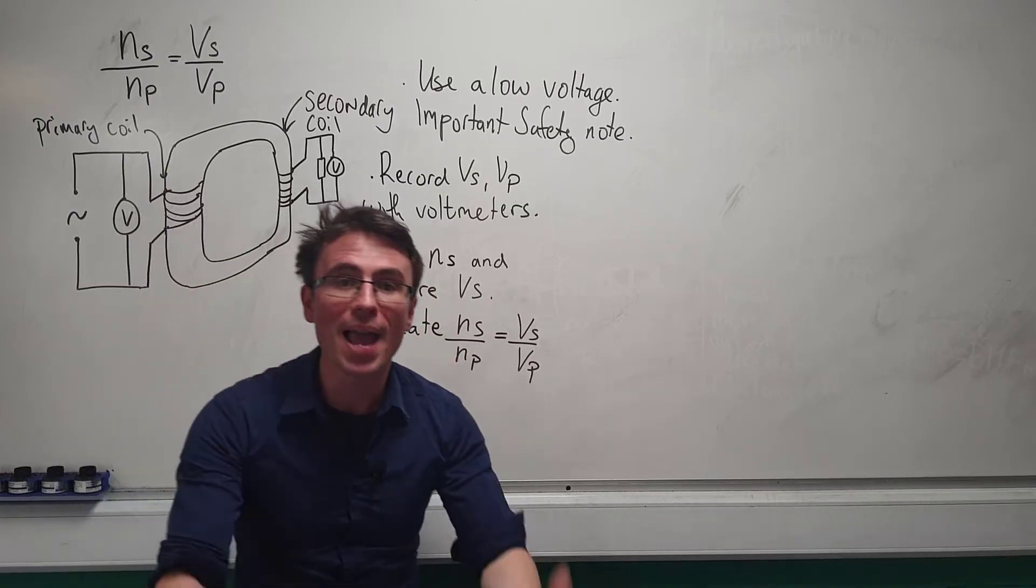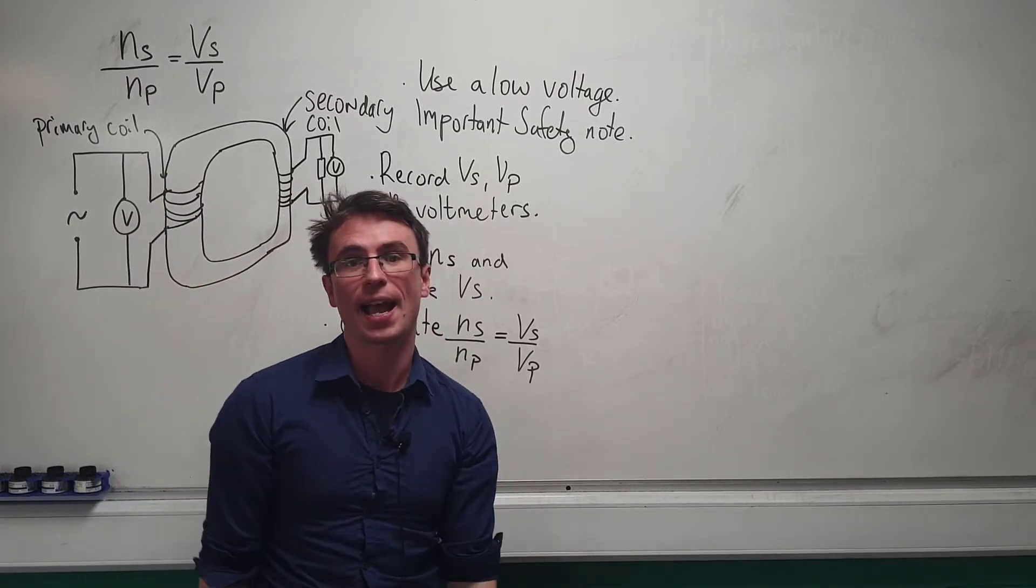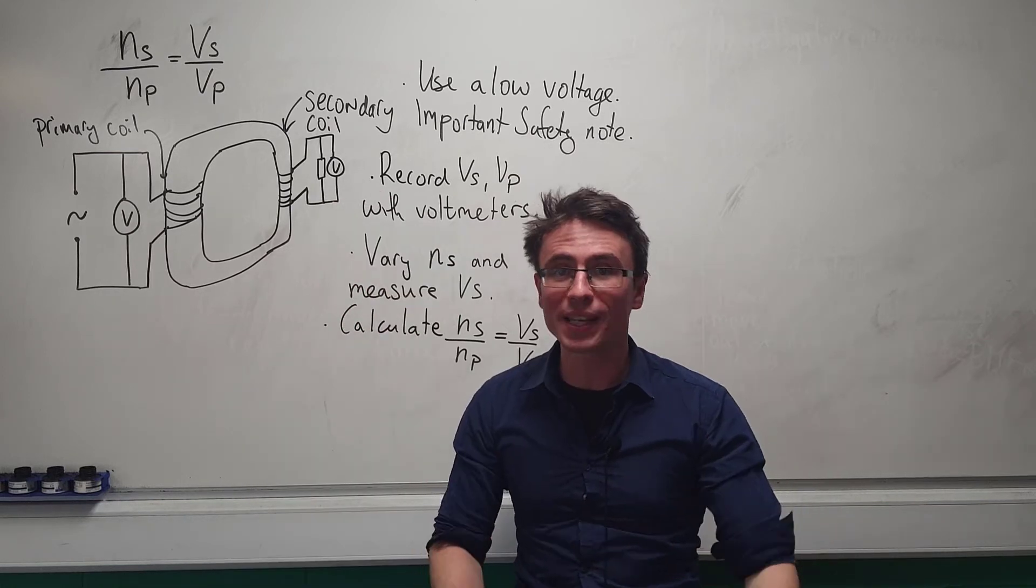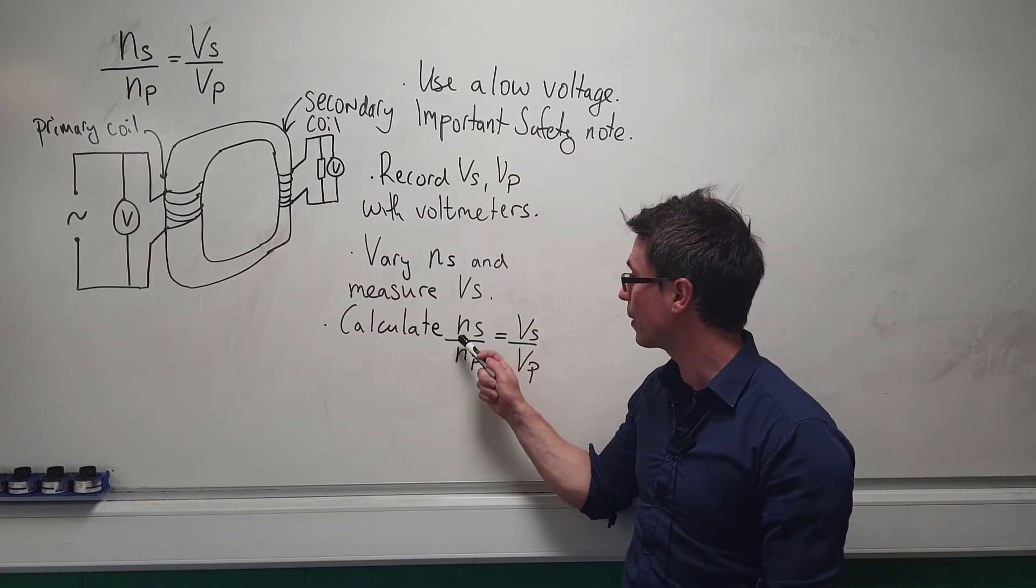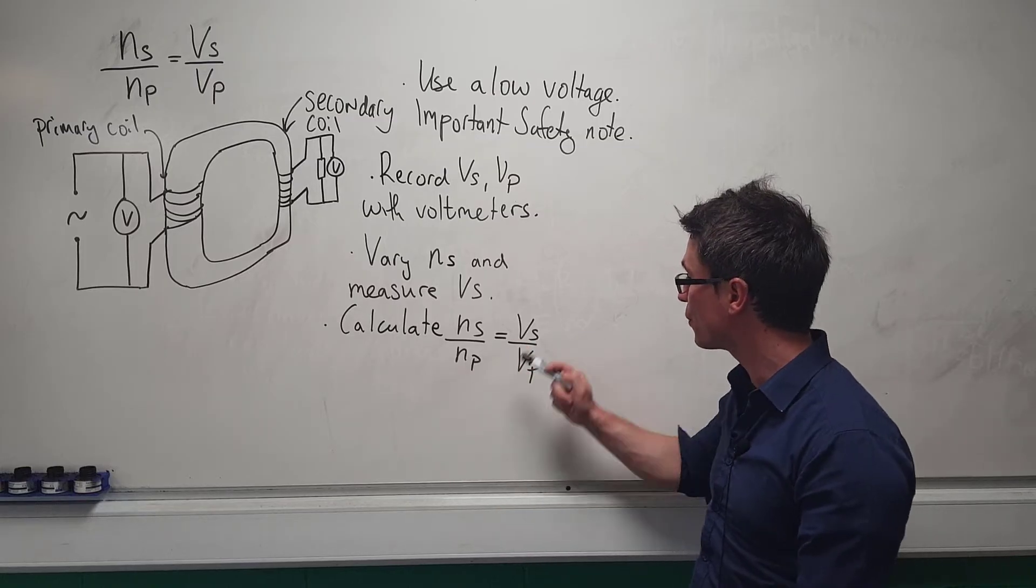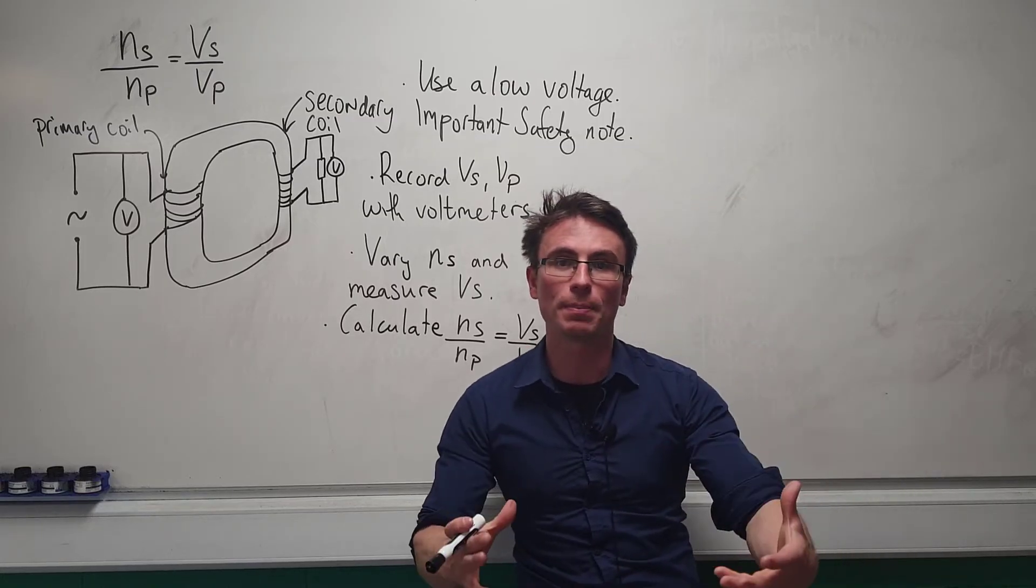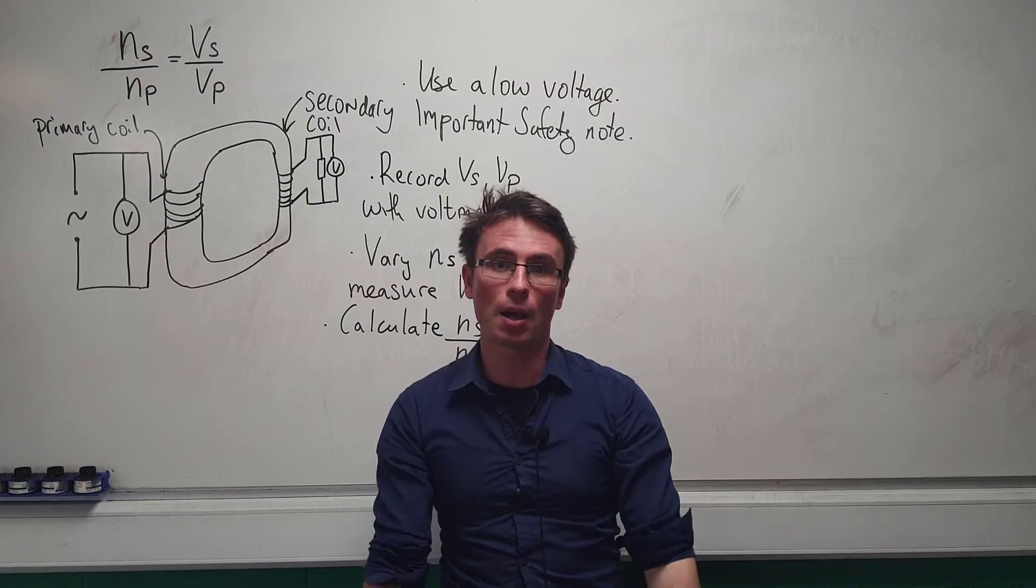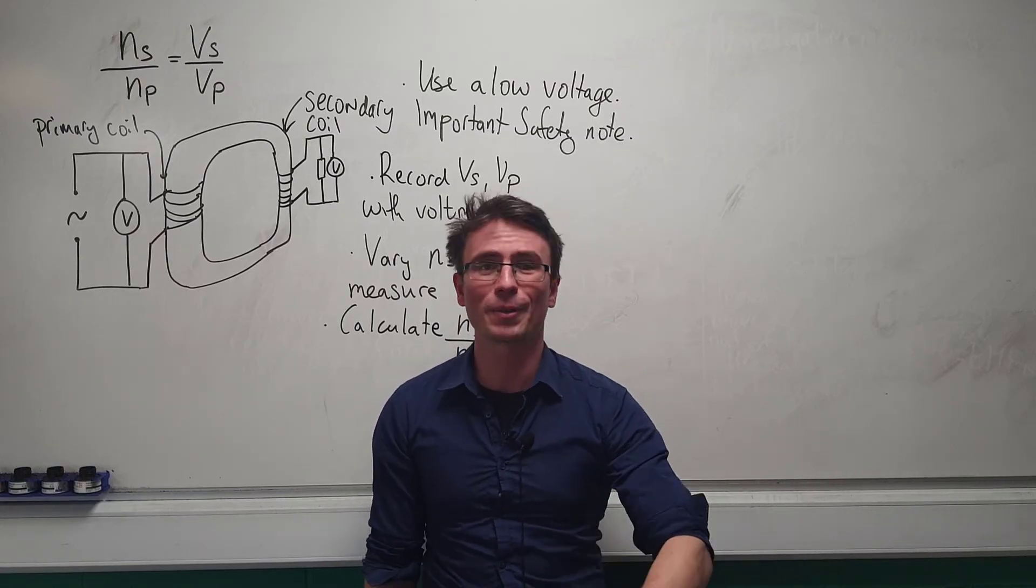And measure the effect it has on the secondary voltage. Every time we vary the number of secondary turns, we could calculate the equation ns over np equals vs over vp, which would confirm our equation. Additionally, we could also choose to plot a graph.